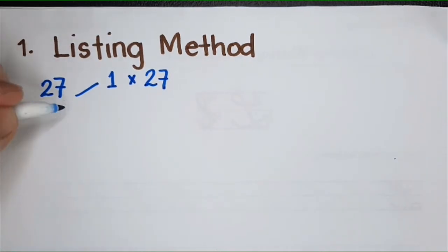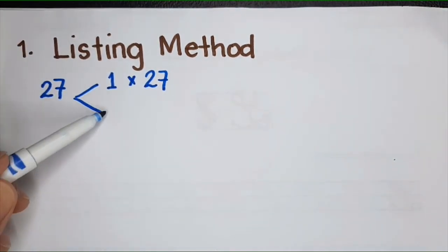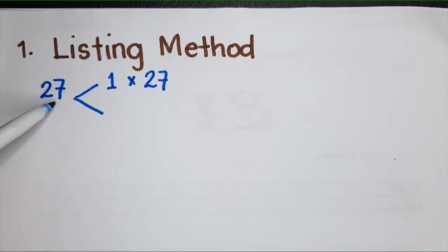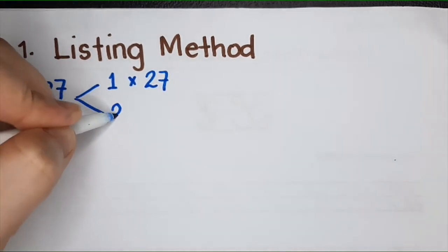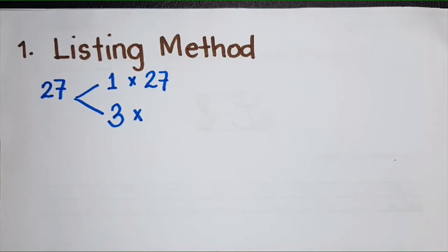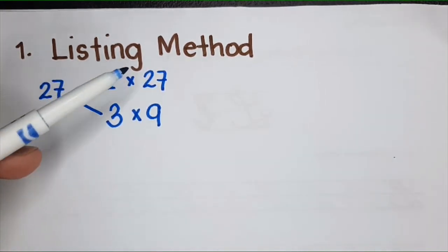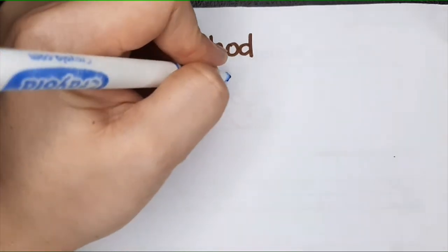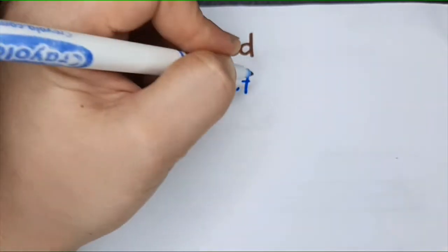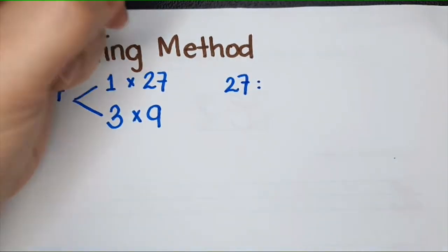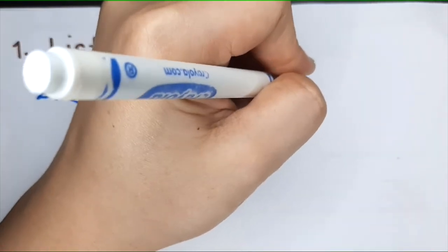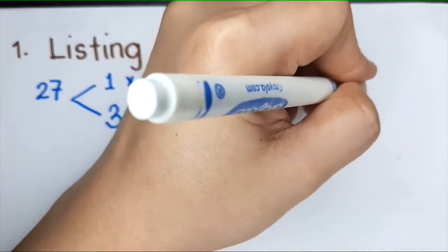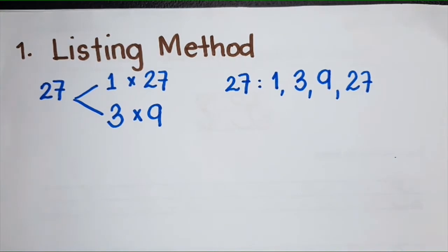27, right? What else? You cannot have 2 as a factor of 27. What's next? 3. You can have 3, so it is 3 times 9. What else? That's all. These are all the factors of 27: 1, 3, 9, 27. What about 45?